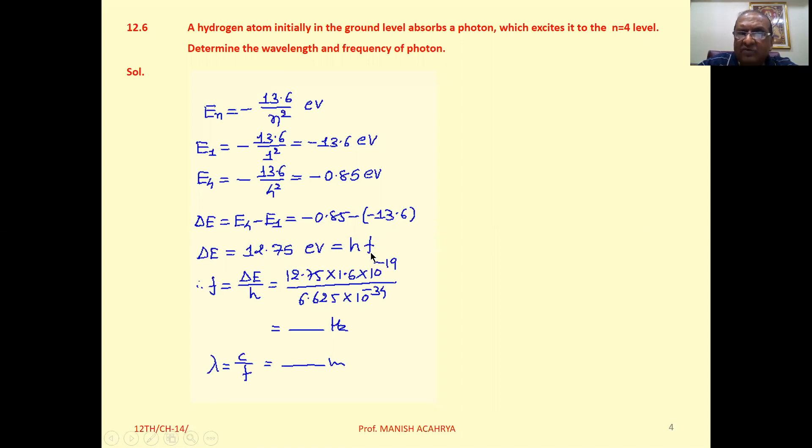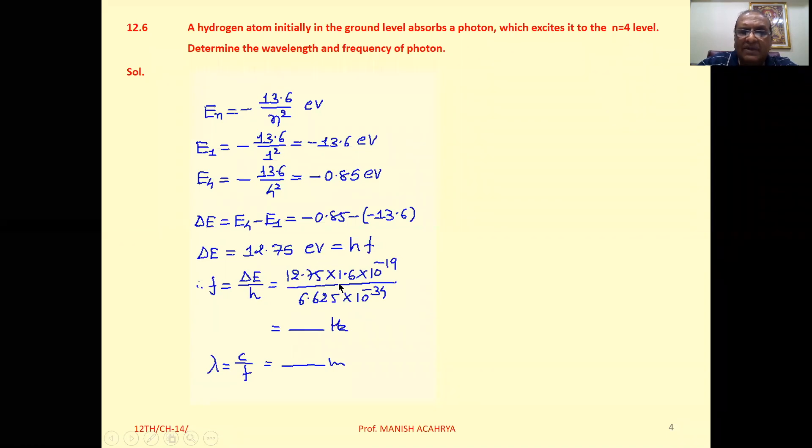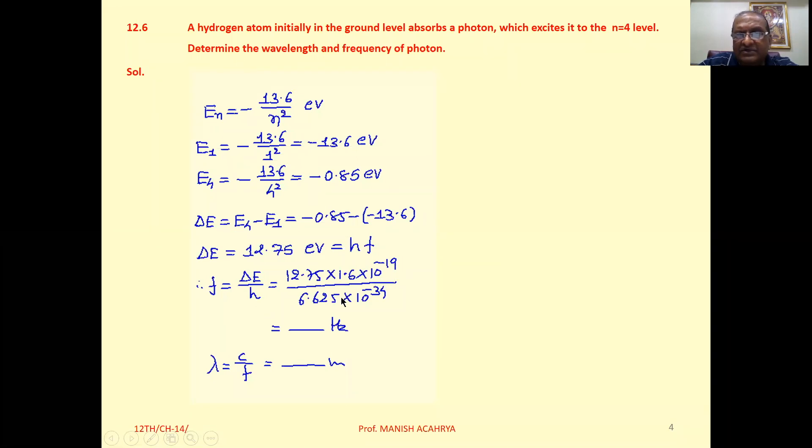So f equals delta E by h. Delta E is 12.75 electron volts. Multiply it by 1.6 into 10 raised to minus 19 to convert to joules, and then substitute the value of h. Solve it and you will get the frequency.